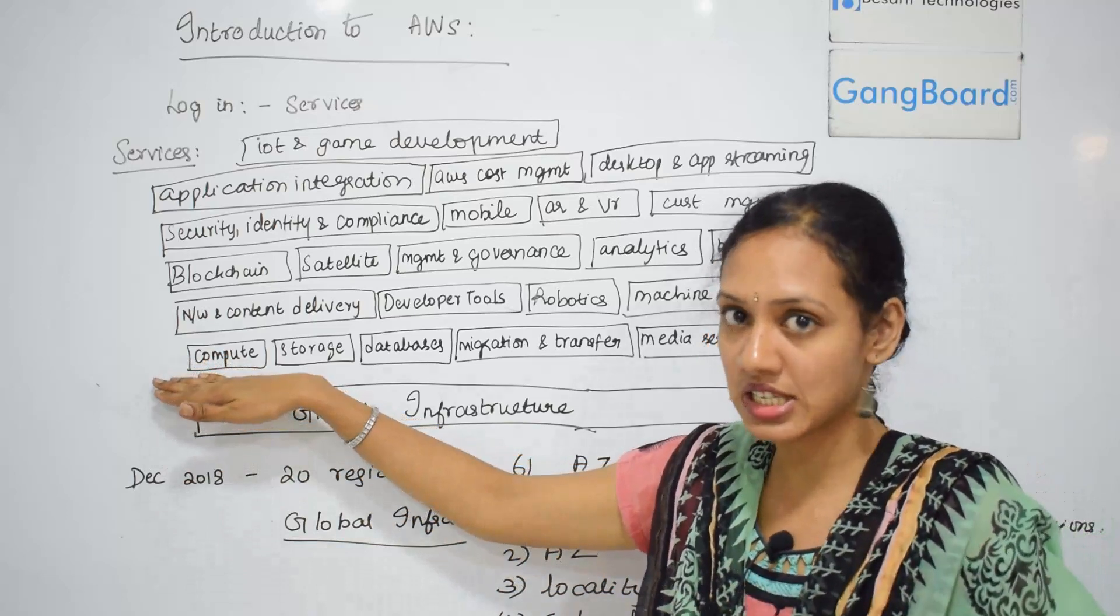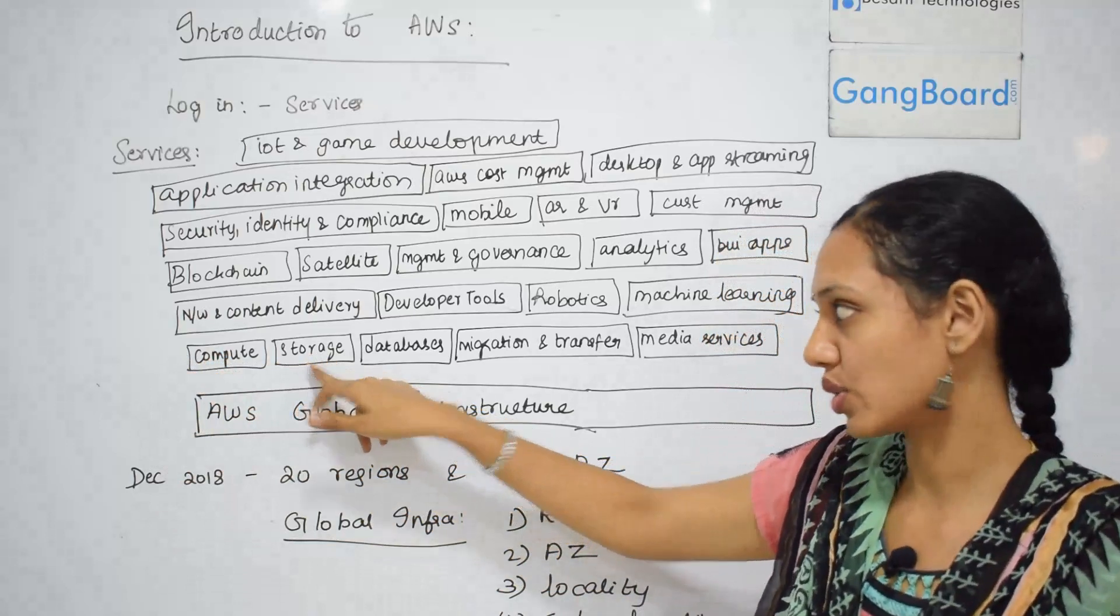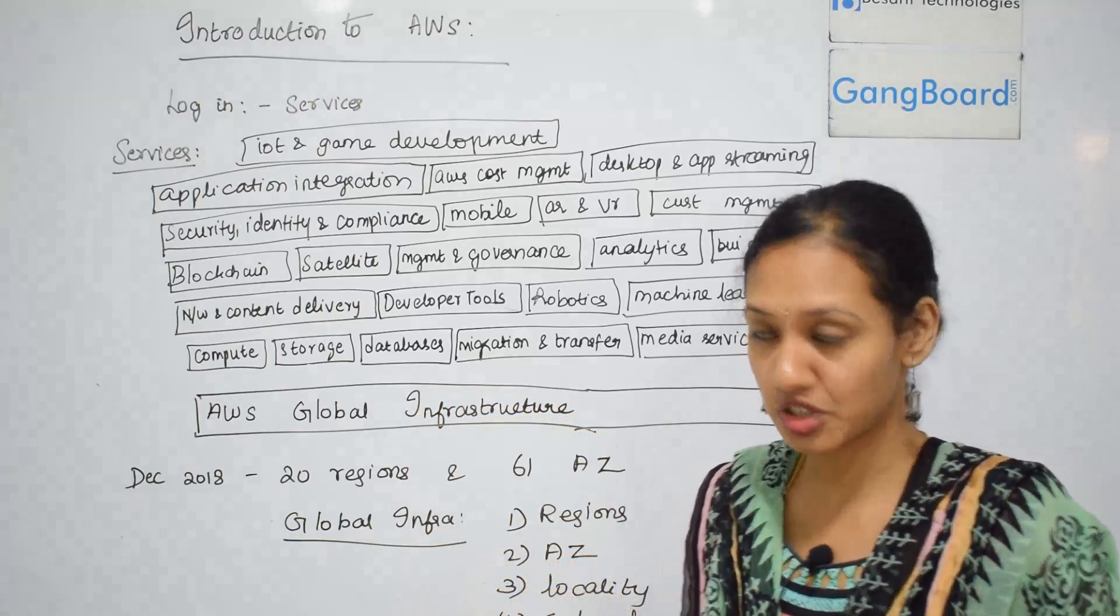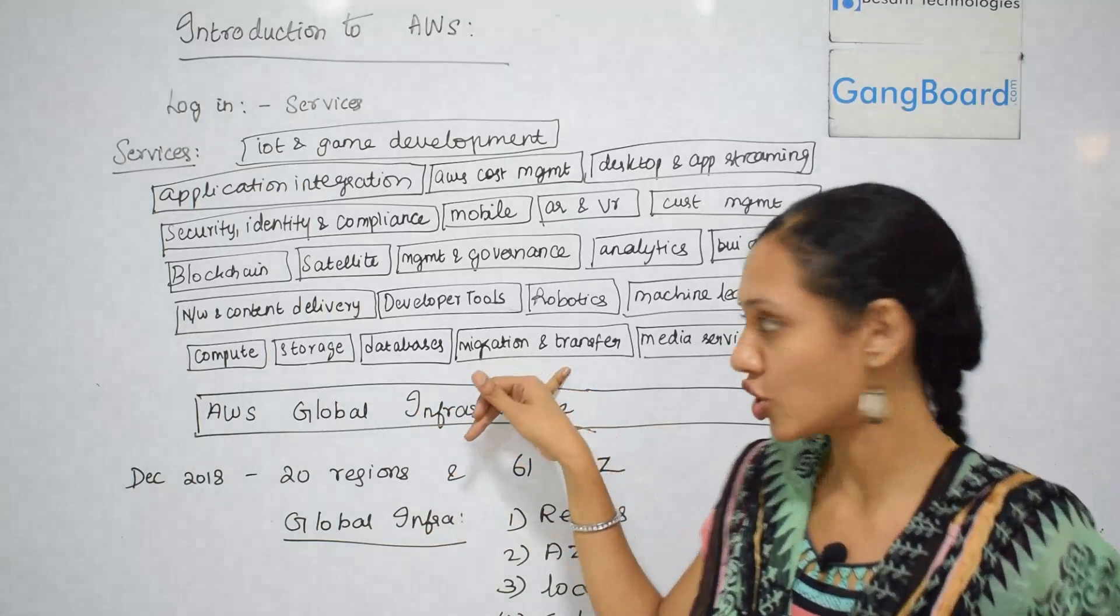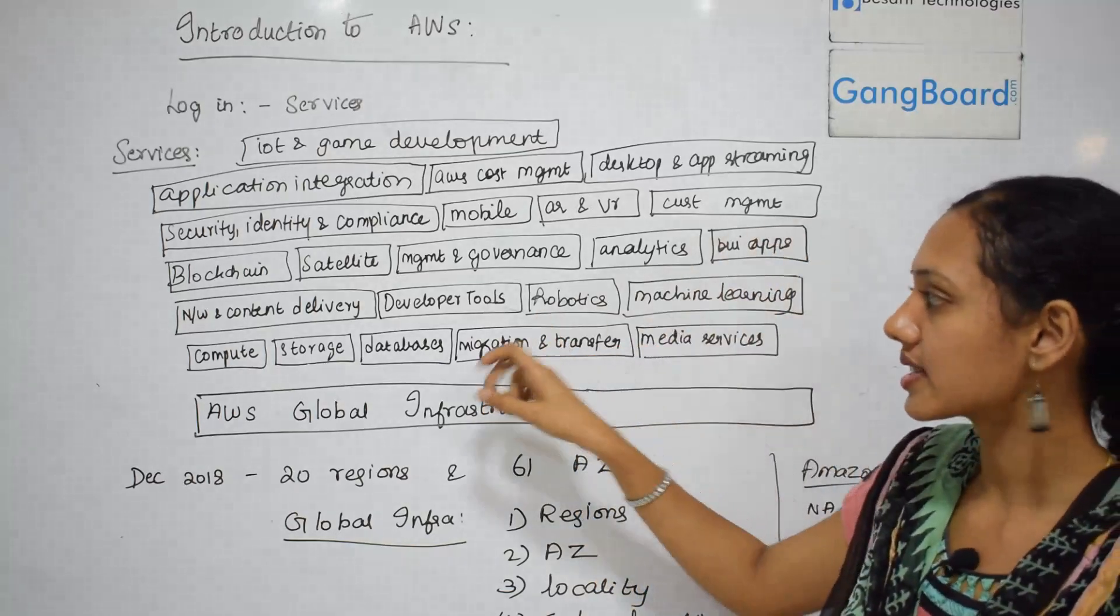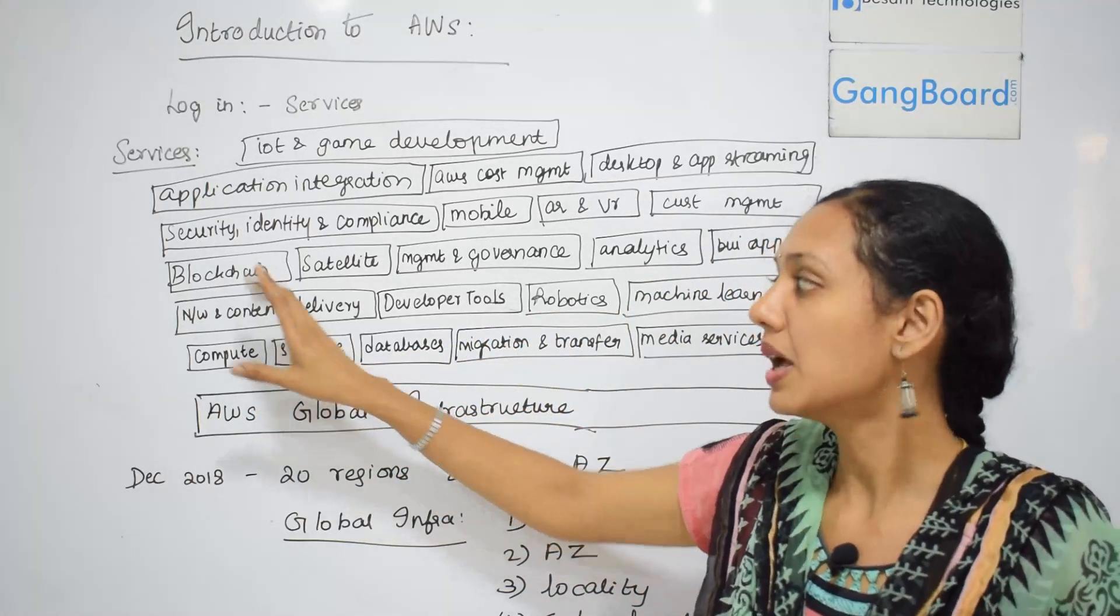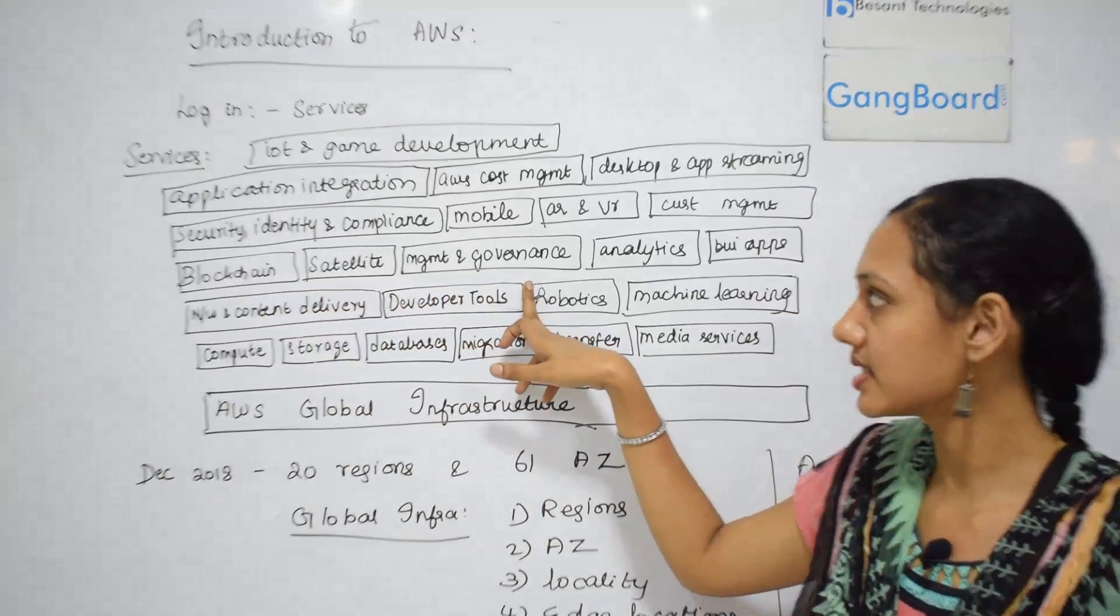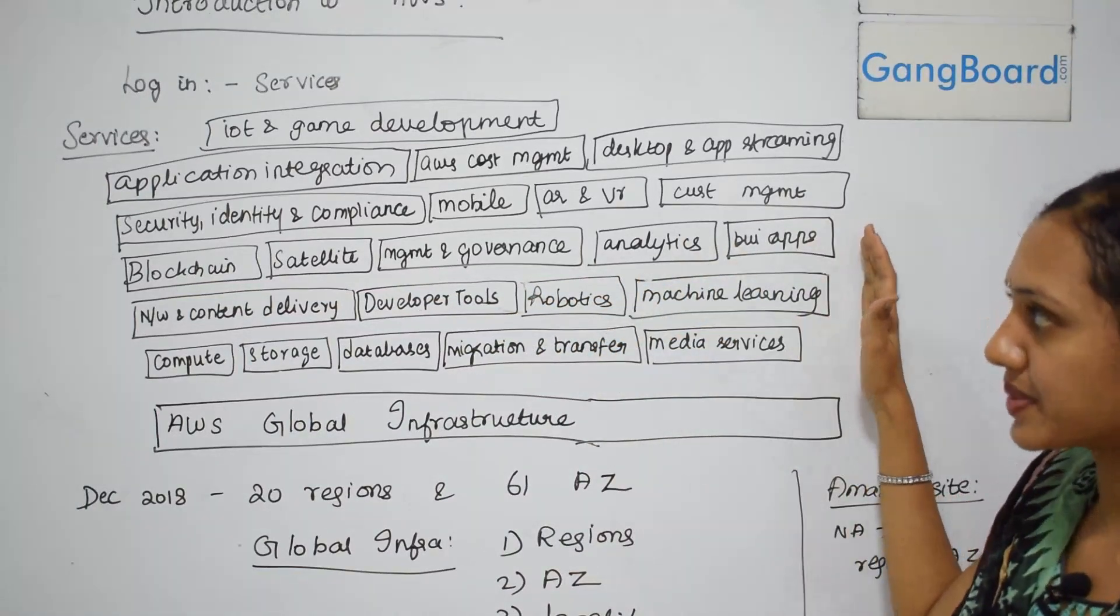There are compute services like EC2, storage like S3, and database services. We have Redshift that is used for data warehousing, which we already saw in the history of AWS. Then migration and transfer services where we have something called Snowball, then media services, machine learning, robotics, developer tools, network and content delivery. This is where VPC comes in, then blockchain and satellite services.